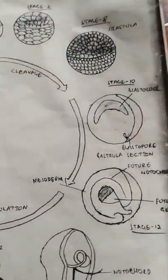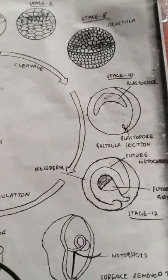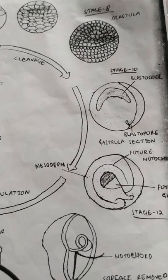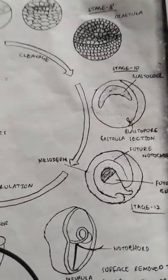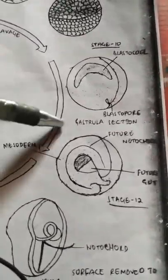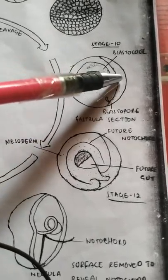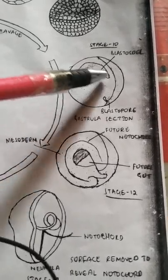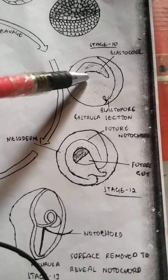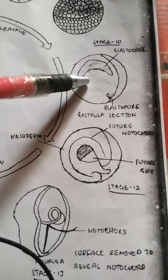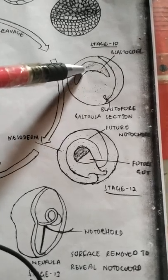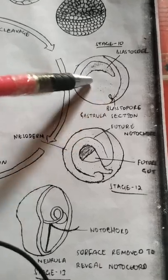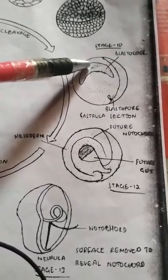The 16 to 64 cell stage is commonly called morula, which is totally covered with micromeres and macromeres. The next stage is blastula. The frog blastula is called coeloblastula. The blastocoel is present in the embryo, and in the frog it is eccentric — meaning it is not present at the center but is shifted towards the animal pole.